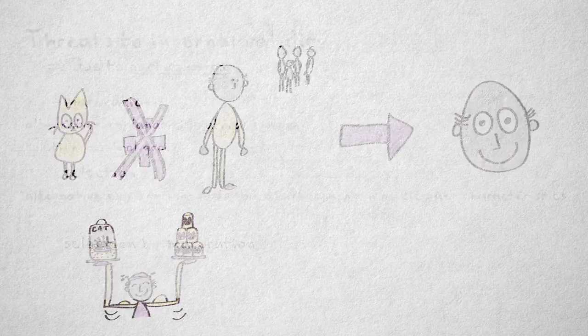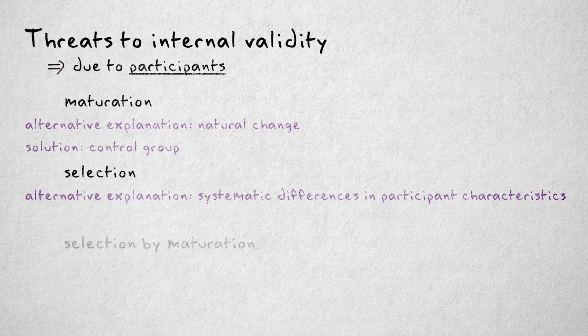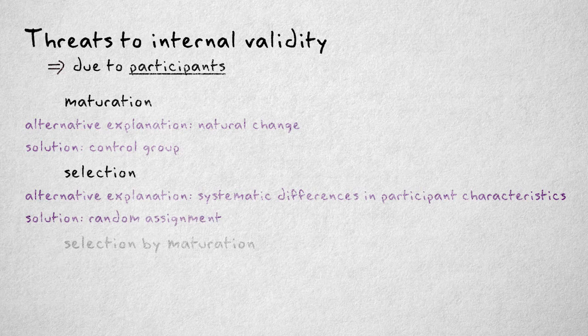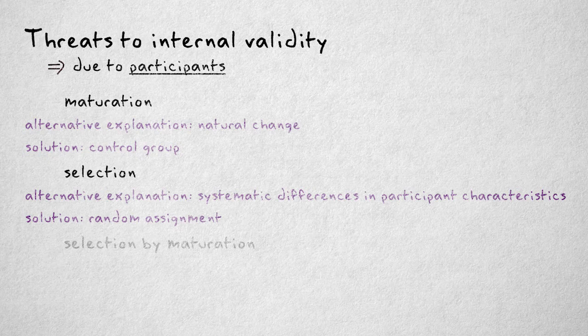A solution to this threat is to use a method of assignment to groups that ensures that a systematic difference on subject characteristics is highly unlikely. This method is called randomization. I'll discuss it in much more detail when we cover research designs.